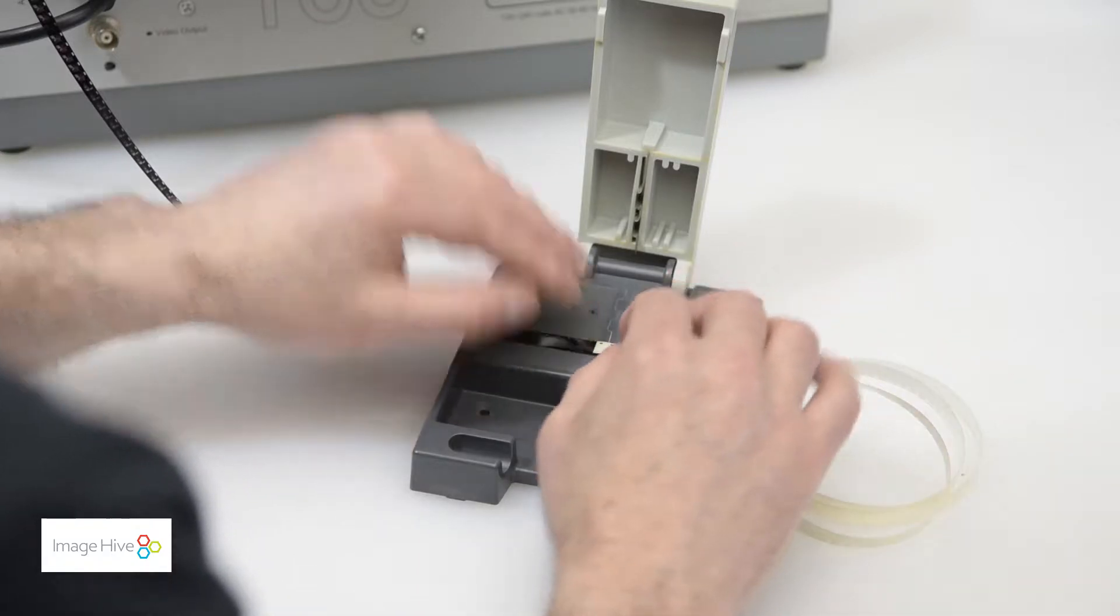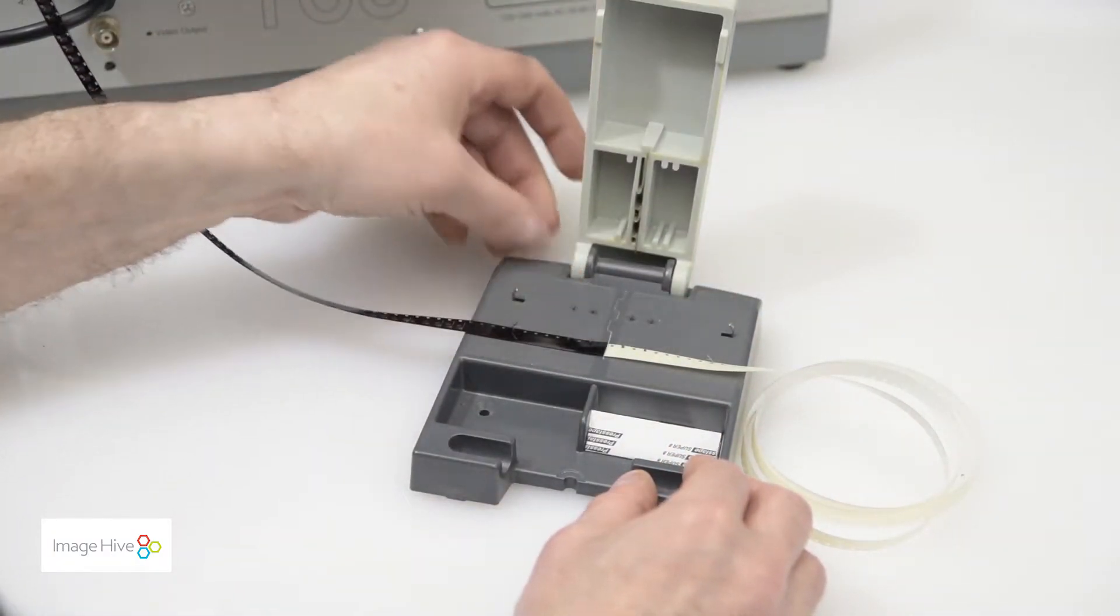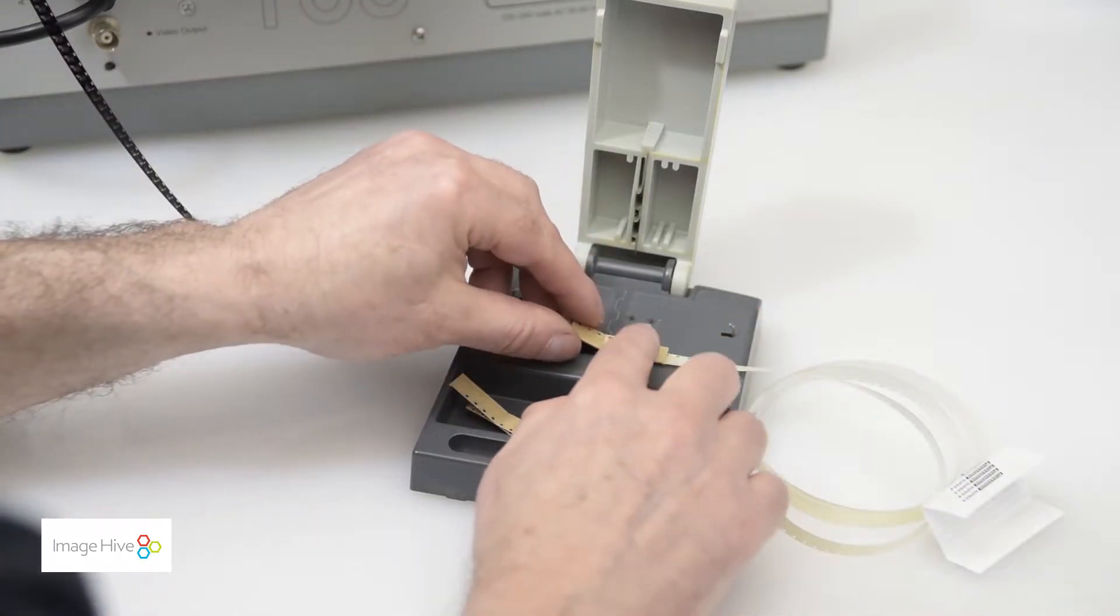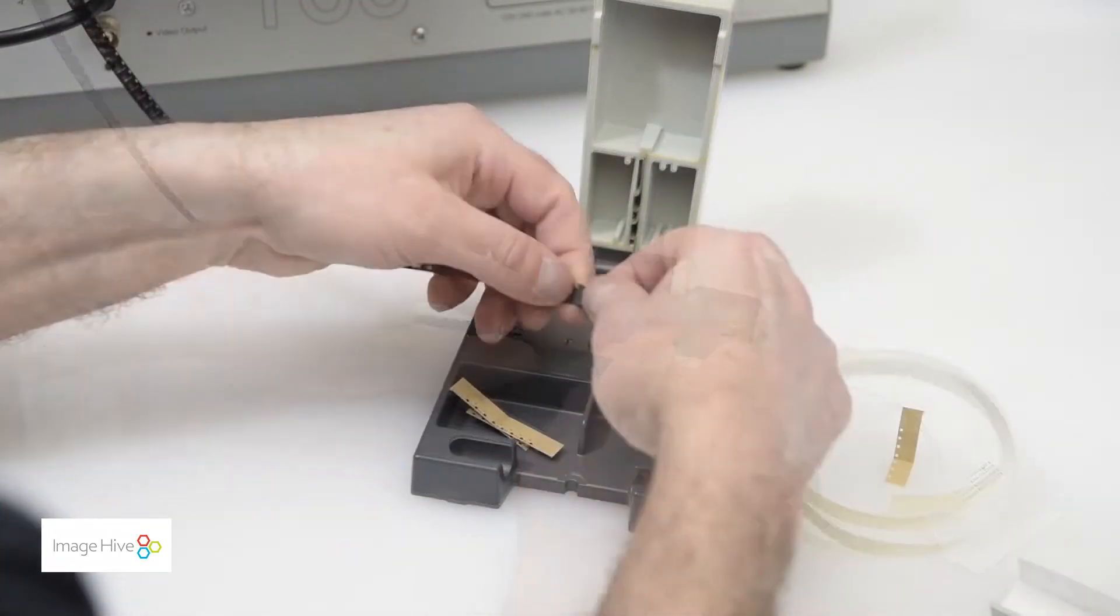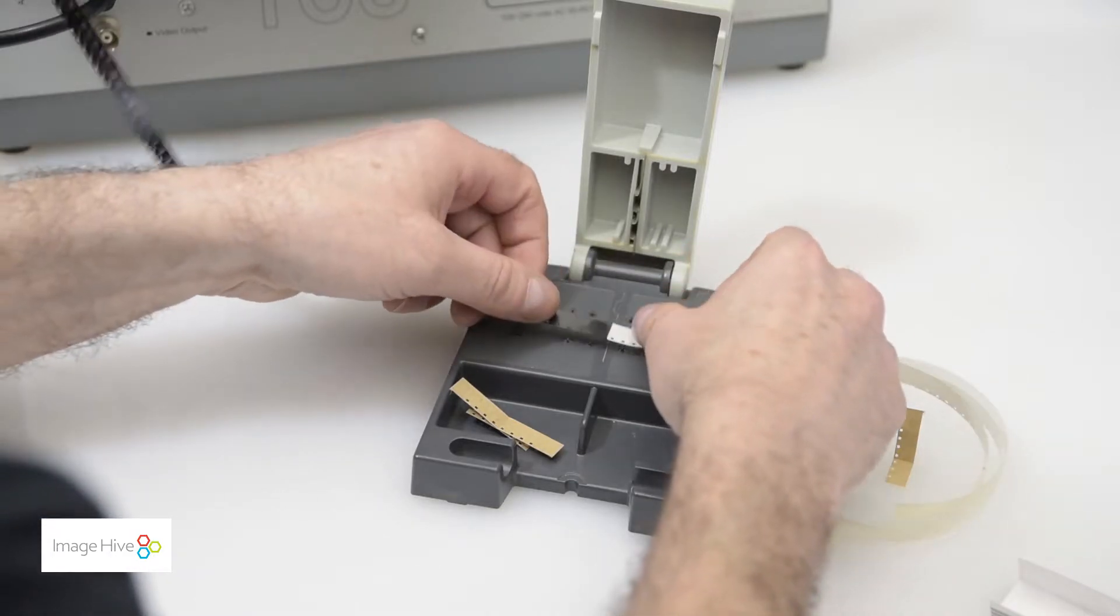If the notches aren't aligning with the perforations, you may be using a splicer that's not suitable for the format of film you're using. You can then place something like a press tape over the center of the two segments being spliced. Repeat this process on the other side of the film.